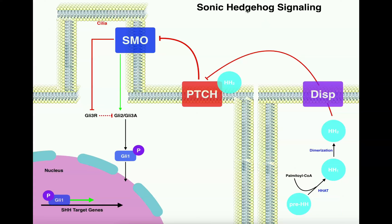Hedgehog is a paracrine signal, and it's going to be released by one cell — such as this one over here on the right of my slide — and then it's going to function on the membrane of a cell adjacent to it, such as this one on the left.